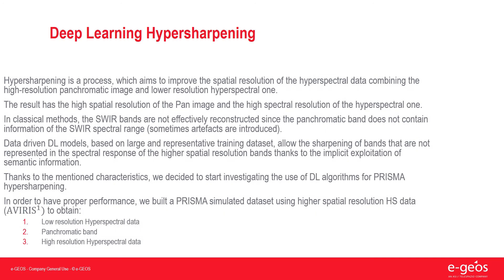Hypersharpening is a process which aims to improve the spatial resolution of the hyperspectral data by combining the higher resolution panchromatic image and the lower resolution hyperspectral one. The result has the high spatial resolution of the pan image and the high spectral resolution of the hyperspectral one. In classical methods, the SWIR bands were not effectively reconstructed since the panchromatic band does not contain information of the SWIR spectral range, hence sometimes artifacts were introduced.